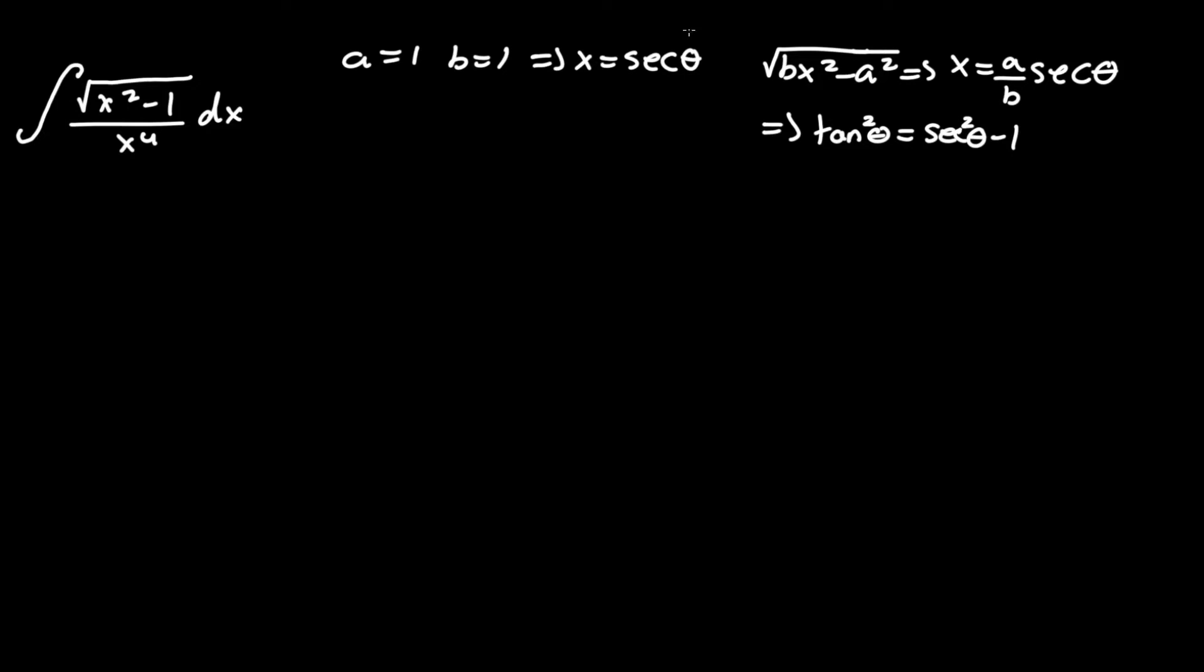So now we are ready to start this integral. Let's substitute secant theta for x. This integral will become integral of square root of secant squared theta minus 1. That's over secant to the fourth power theta.